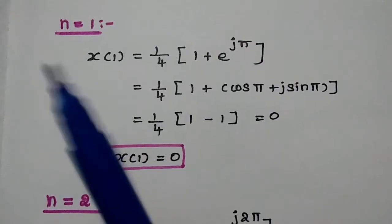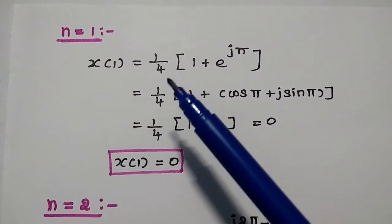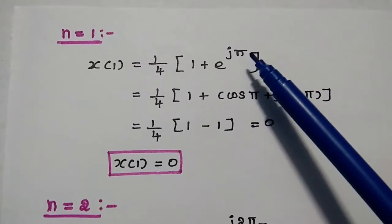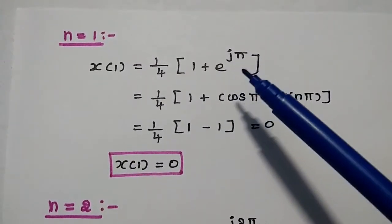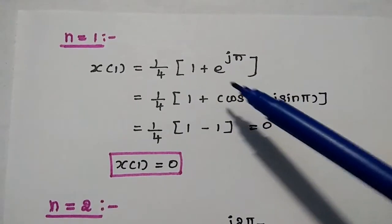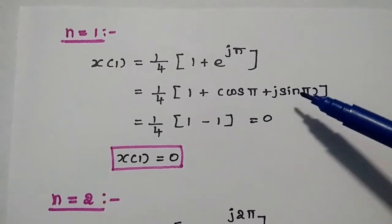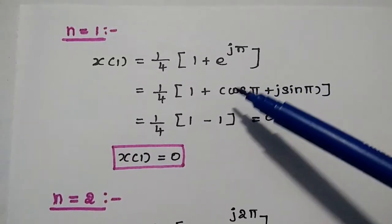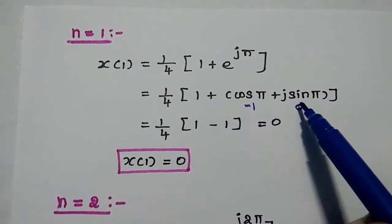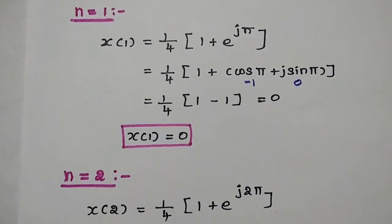Substituting n=1: x(1) = (1/4)(1 + e^(jπ)). Expanding using cos and sine: e^(jπ) = cos(π) + j·sin(π). cos(π) = −1, sin(π) = 0, so 1 + (−1) = 0. Therefore x(1) = 0.